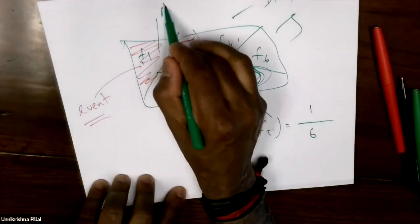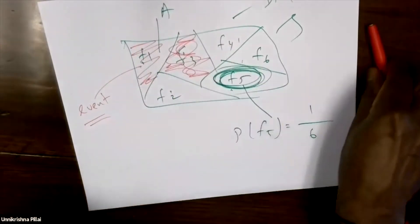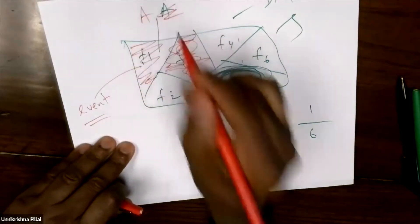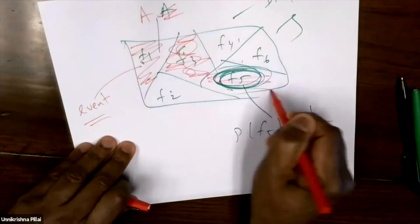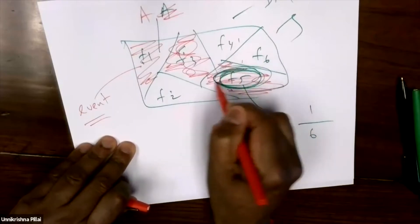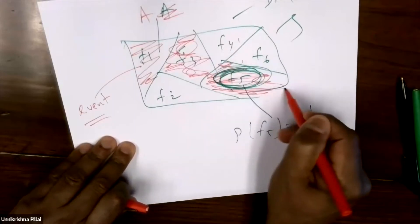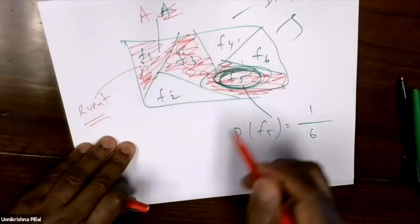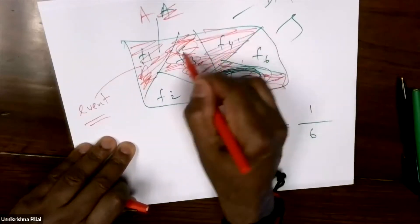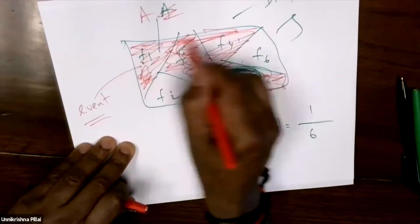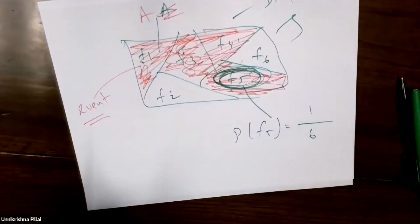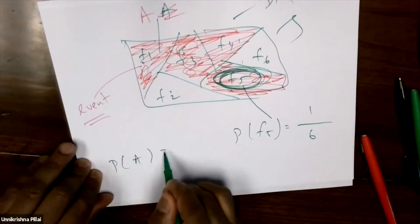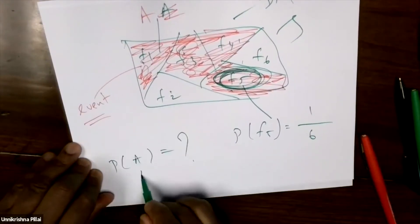Now the question is, if you mark a red region as A, how do you compute the probability of this more complicated event? This course is about how to compute the probability of more complicated events like that.